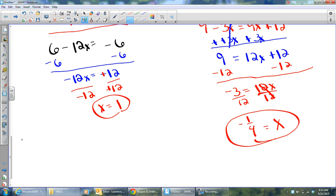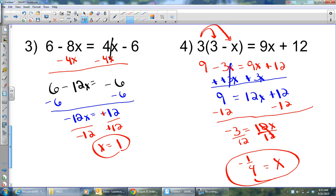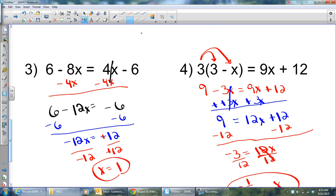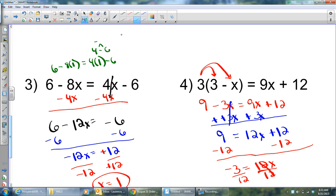Of course, you can check all these answers by taking the answer you got and plugging it back in the original problem. I'll check number 3 here. If I do 6 minus 8 times 1, does that equal 4 times 1 minus 6? Well, this is going to be 4 minus 6, which is going to be negative 2. Oops, I'm out of room. Negative 2. There we go. Over here, I'm going to have 6 minus 8. And 6 positives, 8 negatives, would leave me with 2 negatives left. And yes, indeed, they check. You can do that with any of these problems, okay?